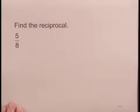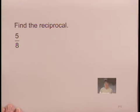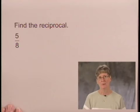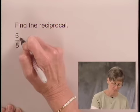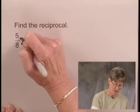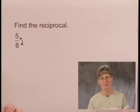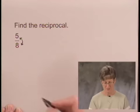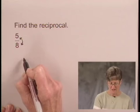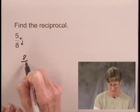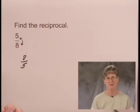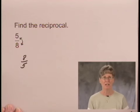In this exercise we're going to find the reciprocal of a fraction — specifically, the reciprocal of 5 eighths. When we find the reciprocal of a number, we interchange its numerator and denominator. So I'm going to put the denominator in the numerator and the numerator in the denominator. The reciprocal of 5 eighths is 8 over 5, interchanging the numerator and denominator.